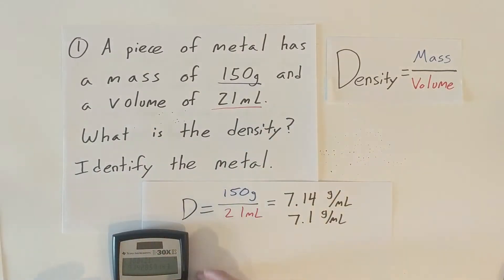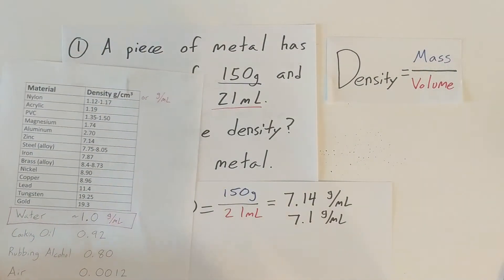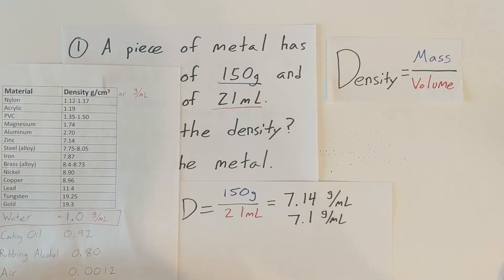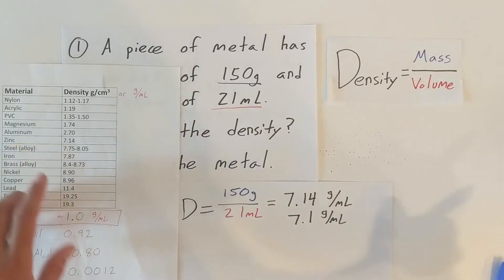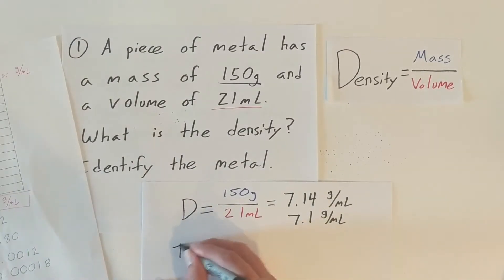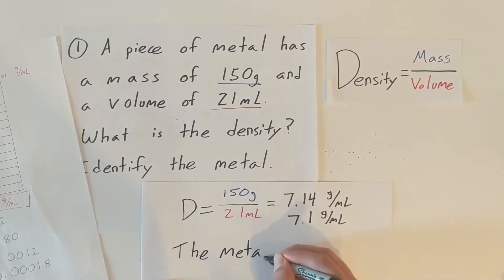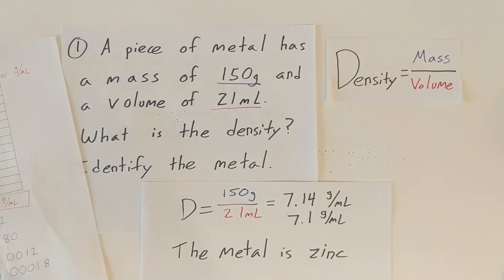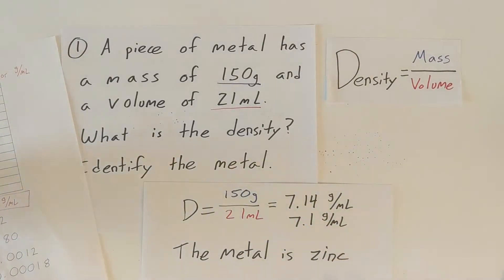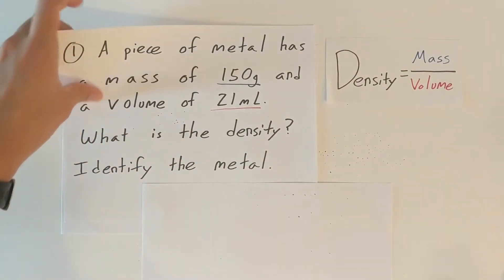Let's look at our table, and we can see the closest to 7.1 would be zinc. So we can say the metal is zinc. That is our first practice problem. Practice problem two: